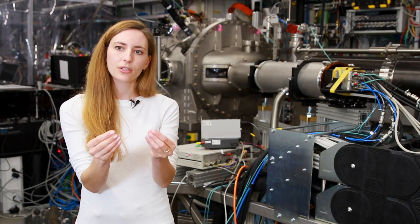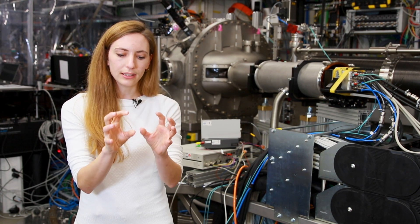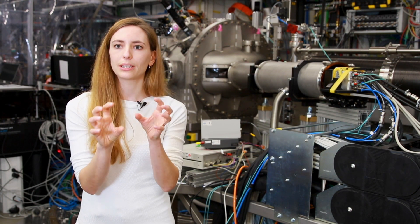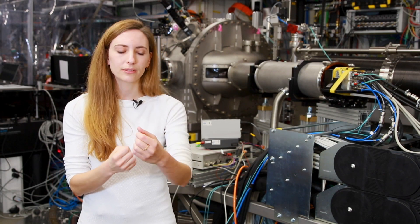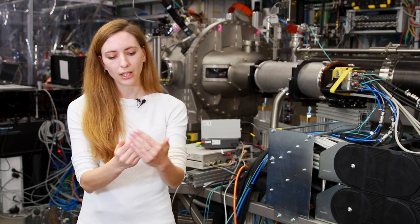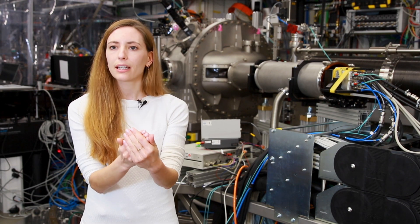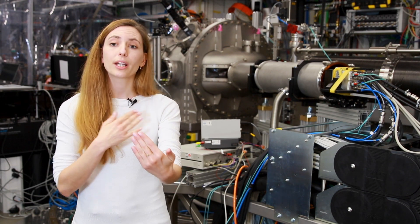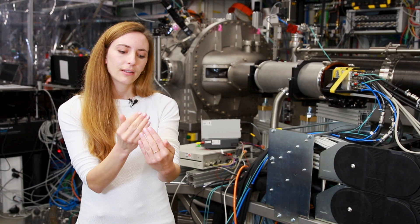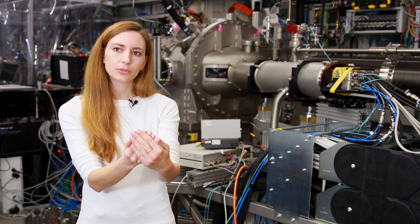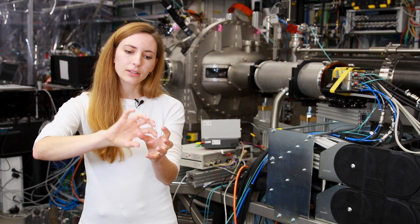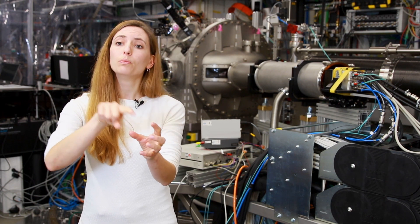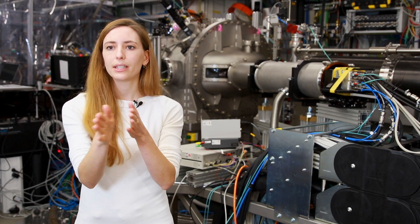And this creates a speckle pattern, and this contains information about the instantaneous positions of the molecules in the sample. So this is like a single shot. And what we do now is we use a second X-ray pulse to look again. And the time delay between those two pulses determines how fast we can see if the molecules moved during this time delay.